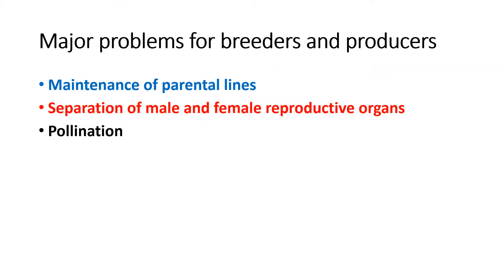Major problems for breeders and producers: number one is maintenance of parental line — it is a really difficult process to maintain the parent line and inbred line every time. Number two is separation of male and female reproductive organs, which is also a tedious process. Number three is pollination. All these are time-consuming, tedious processes.